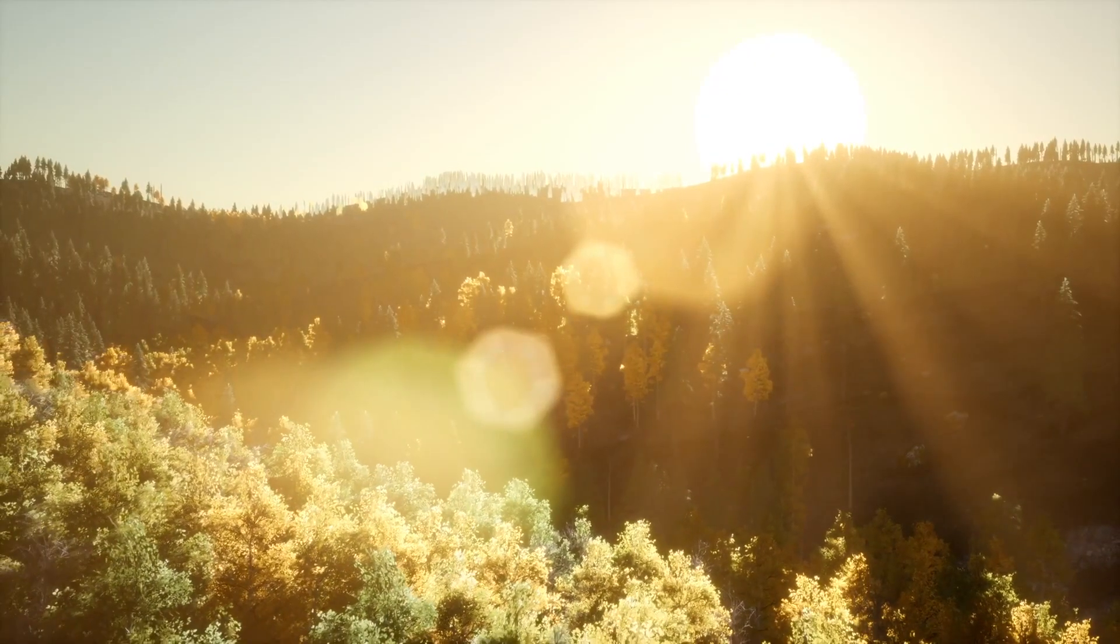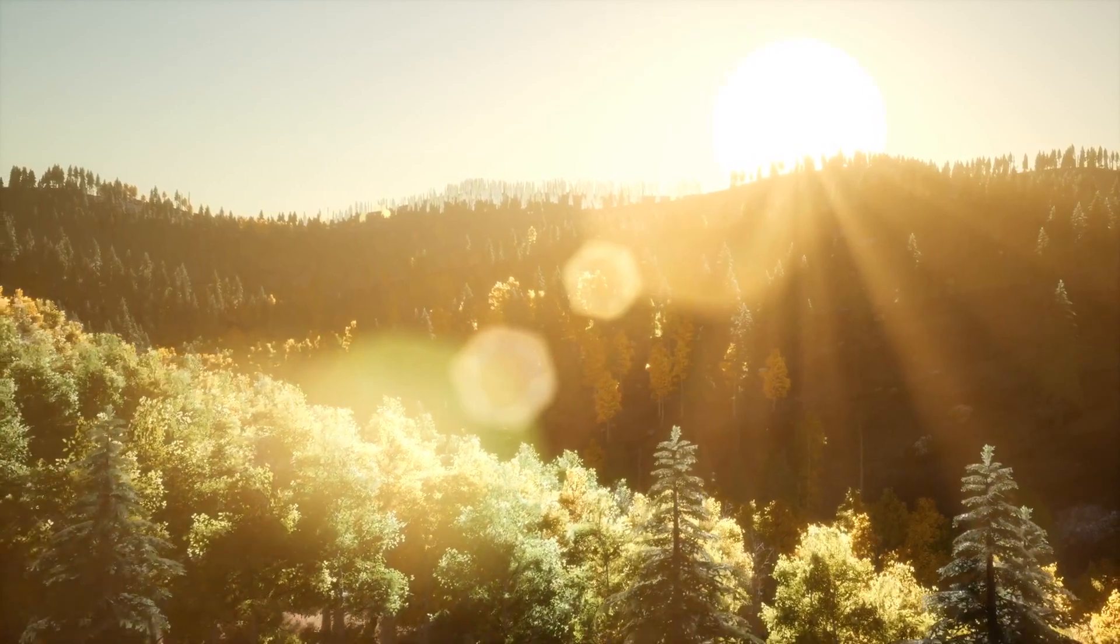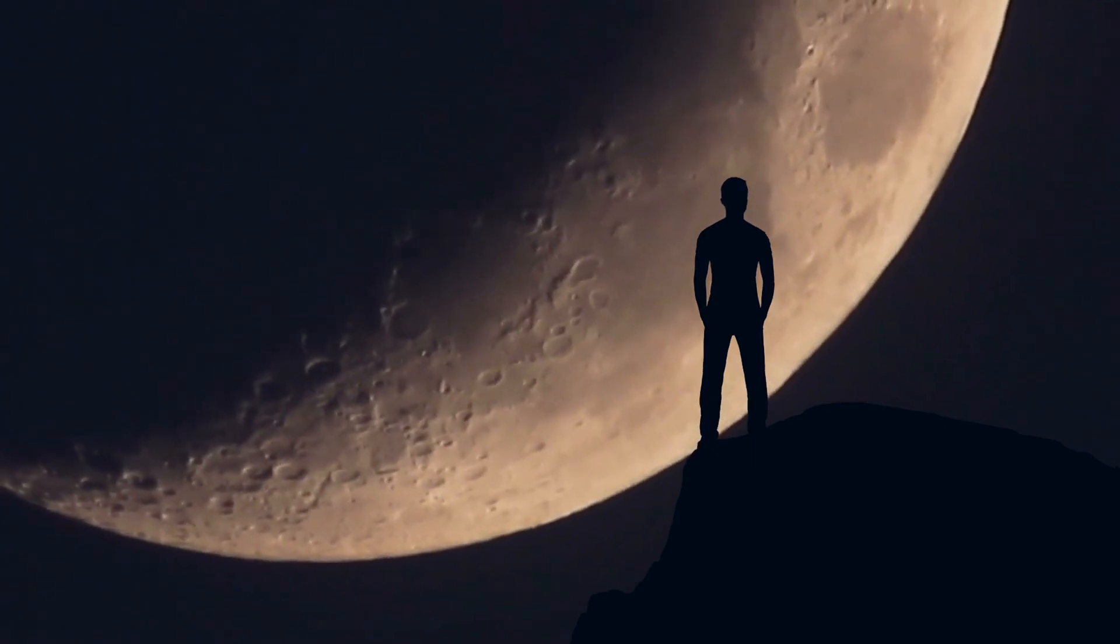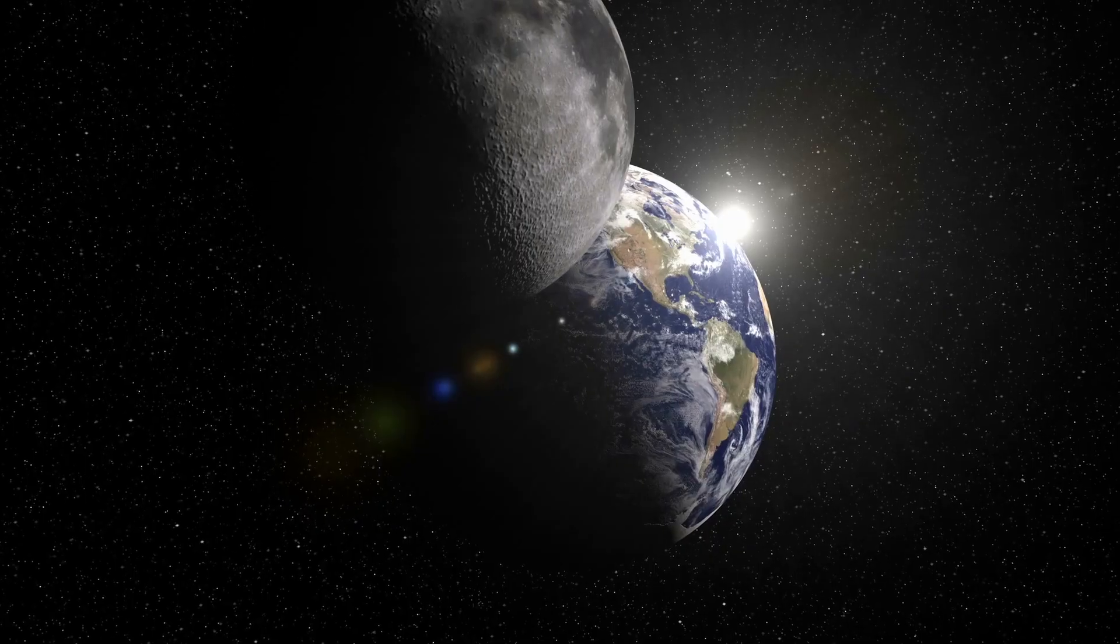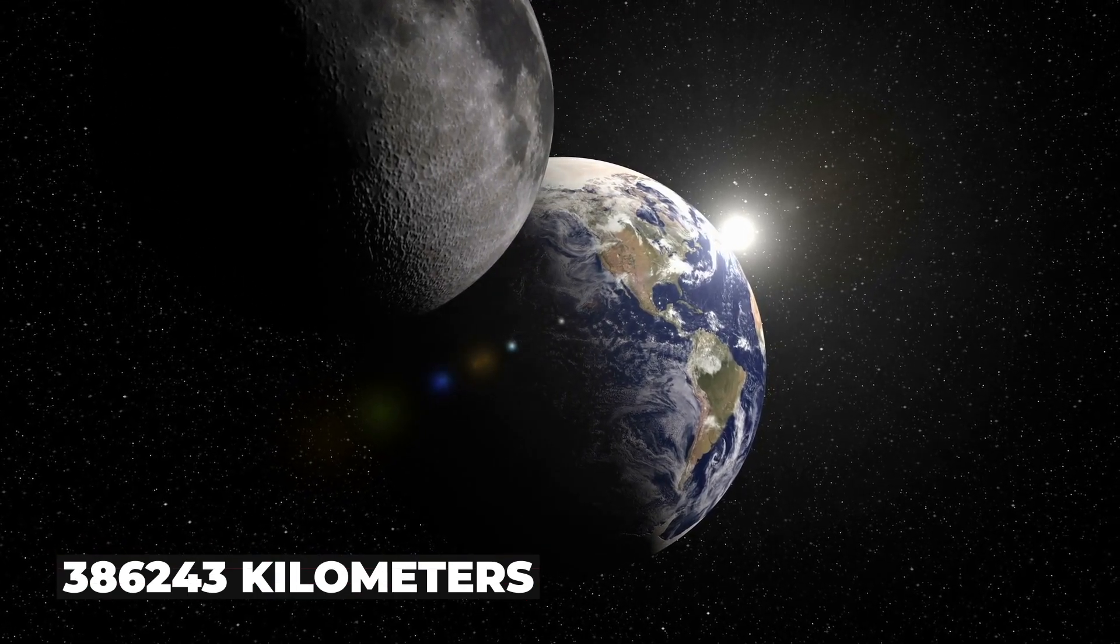To put this under perspective, it takes just about 8 minutes for the light from the sun to reach the Earth. That's about 150 million kilometers, and a little more than a second for light to move from the Earth to the moon. That's a distance of approximately 386,243 kilometers.